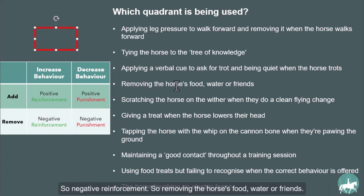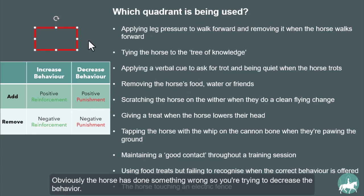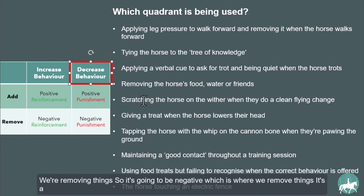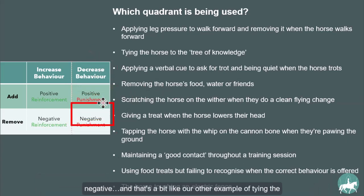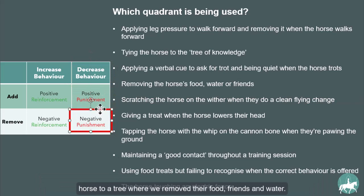Next: removing the horse's food, water, or friends. The horse has done something wrong, so you're trying to decrease the behavior. We're removing things, so it's negative, and since we want less of this behavior, it's negative punishment — similar to the tree of knowledge example where we removed the horse's food, friends, and water.